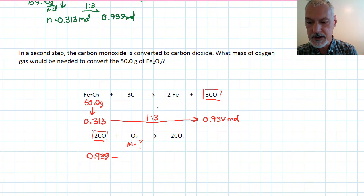And now, I use the ratio that exists between these two, which is 2 to 1. So, that's going to give me half that number, 0.457 moles.